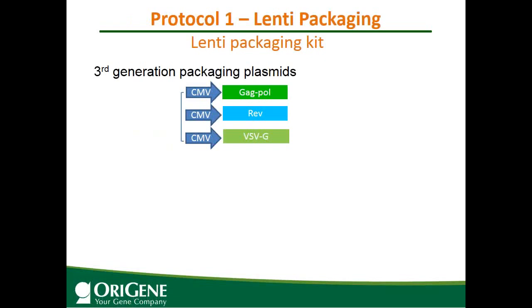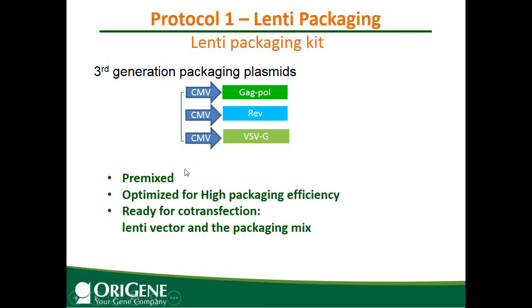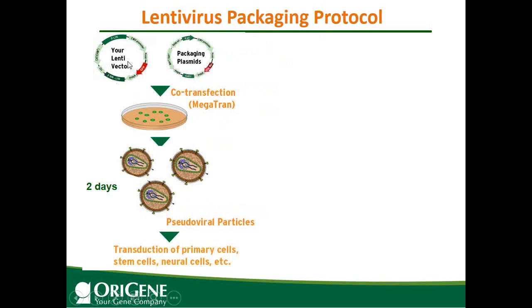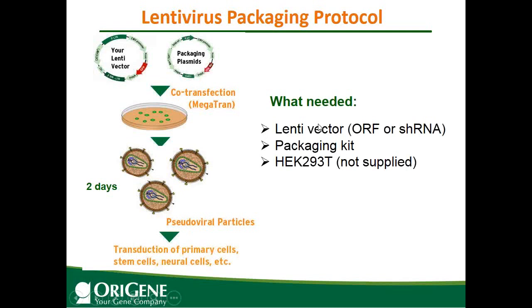Protocol one is lentiviral packaging. OriGene's lentiviral packaging kit is for the third generation vector. The packaging kit has three plasmids, premixed and optimized at the optimal ratio for high packaging efficiency. It is ready for co-transfection with your lentiviral vector to produce high-titer lentiviral particles. You co-transfect your lentiviral vector with the lentiviral packaging plasmid into HEK293 cells, and two days later the virus is released into the supernatant and ready to transduce your cells.